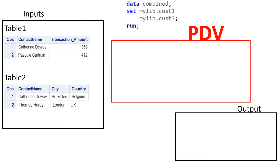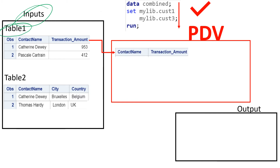When SAS starts processing and we give the instruction, first of all SAS validates the syntax. If the syntax is correct, then SAS moves to the input area, looks into the first table, checks the structure, copies the structure to the PDV area, and then moves to the second table column. From there it copies the structure and checks if there is a common column — it merges them.